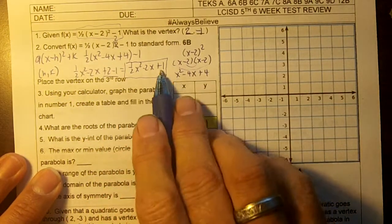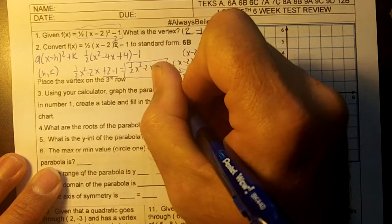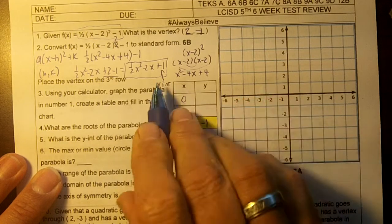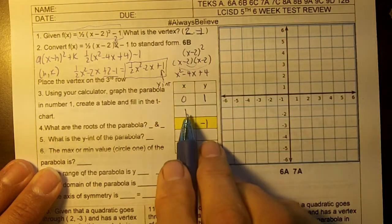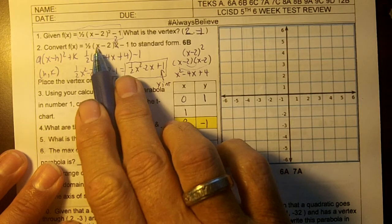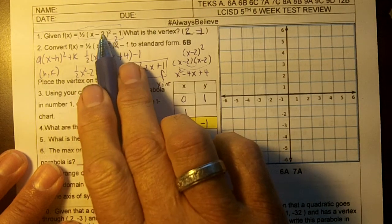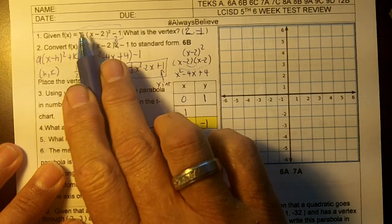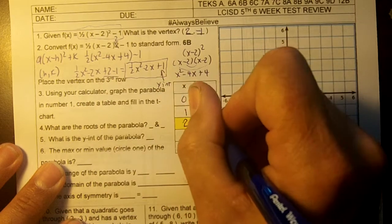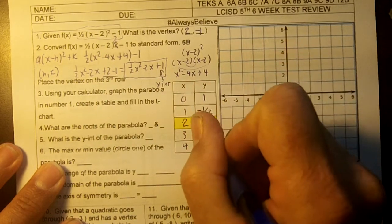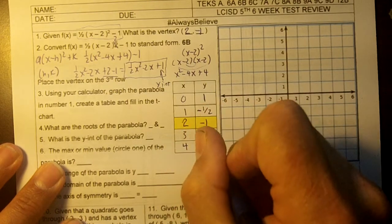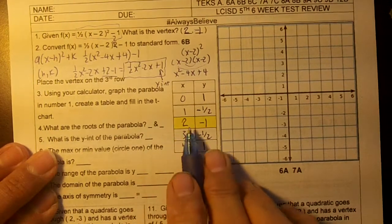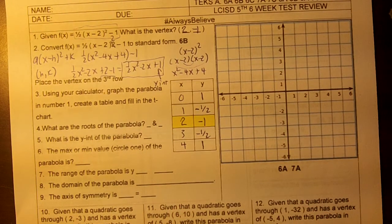This right here would be our y-intercept. So on our graph, we know we're going to go from zero to four. We know the y-intercept's one. If we plug in one, let's plug in a one right here. One minus two is negative one. Negative one squared is a positive one. One times a half is a half. One half minus one is a negative half. So this will be negative one half and negative one half. And this four will be a one. You could also get these numbers by doing control T. Now then the zeros of the parabola aren't on here. And I need a calculator for that.